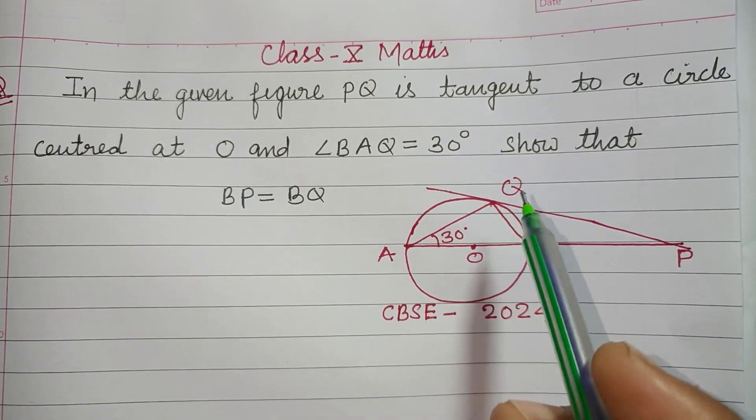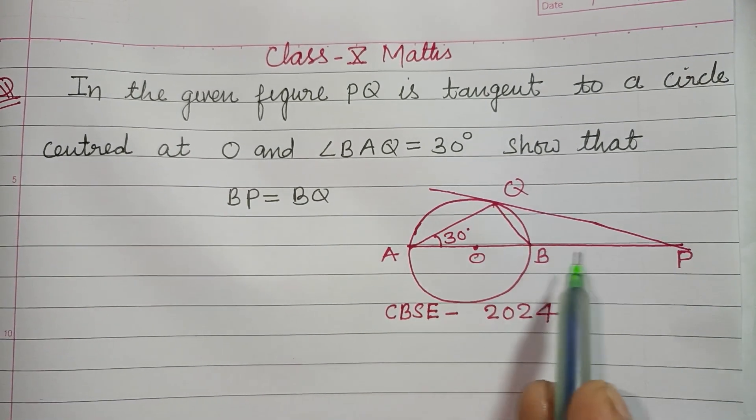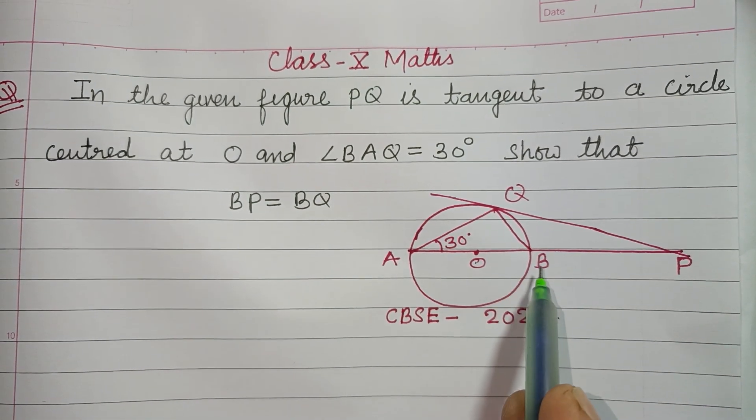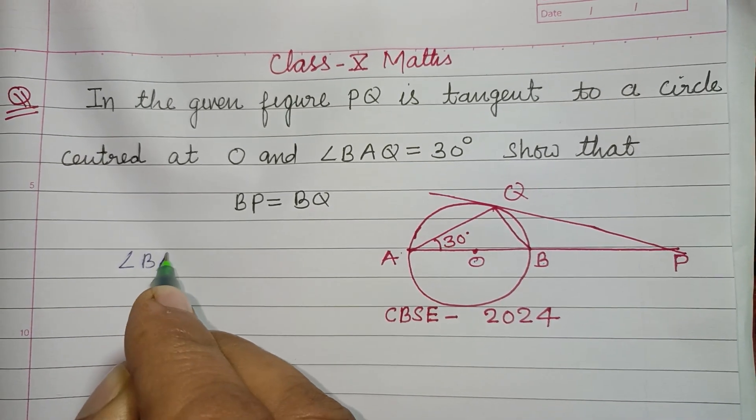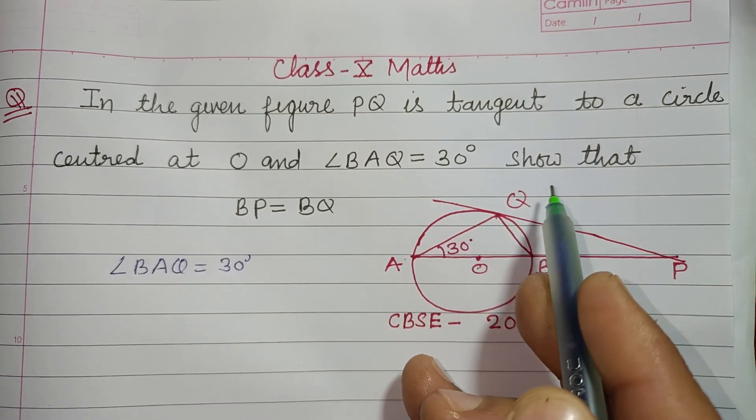In the given figure, PQ is tangent to a circle centered at O, and angle BAQ is given as 30 degrees. We need to show that BP equals BQ.